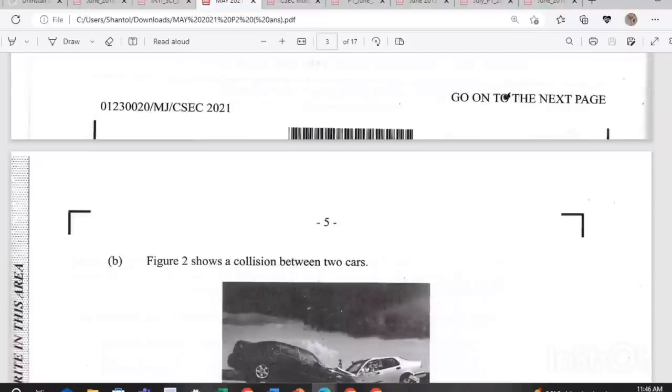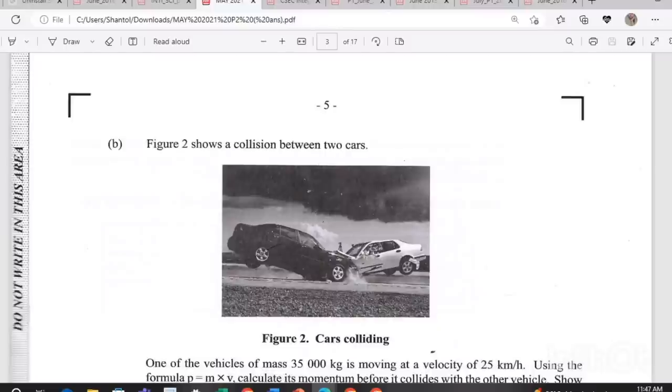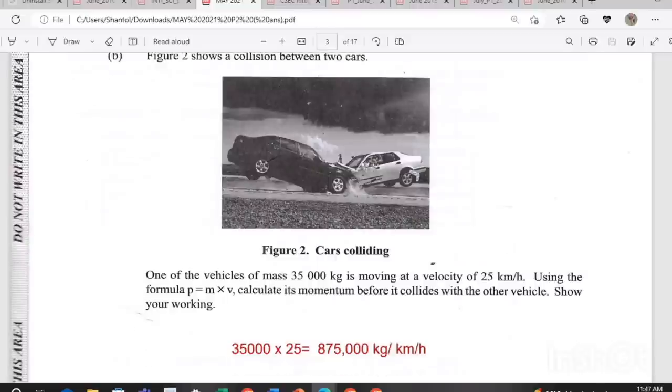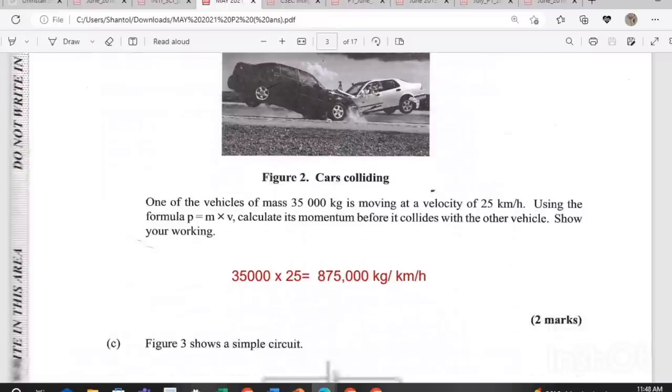Figure two shows a collision between two cars. One of the vehicles of mass 35,000 kilograms is moving at a velocity of 25 kilometers per hour. Using the formula p equals m times v, calculate its momentum before it collides with the other vehicles and show your working. All they're asking you to do is look at the information in the question and plug it into the formula they give you. 35,000 times 25 will give us 875,000 kilograms per kilometers per hour. That is for two marks.